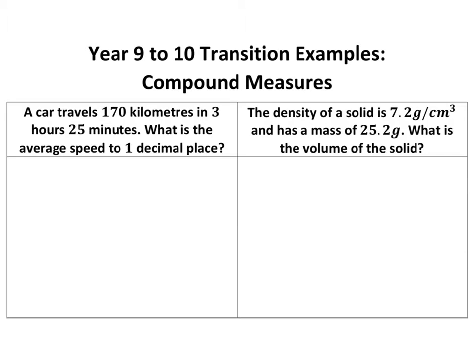Speed is the first one. Speed equals distance over time. You should know that. You might have seen it as a triangle. Speed equals distance over time. Distance is 170 kilometers. Now, don't put 3.25. There's not 100 minutes in an hour, so I would convert everything to minutes.